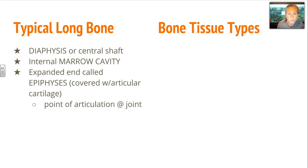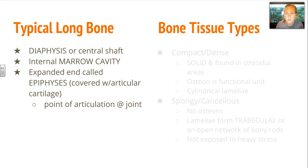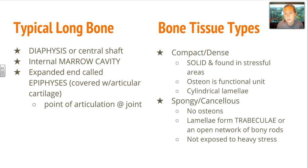Taking a closer look at a typical long bone, you have the diaphysis, or the central shaft — the middle portion of the bone. Inside, you have your internal marrow cavity. The expanded ends are called epiphyses, and they're covered with articular cartilage, helping with pivoting at the point of articulation at a joint. There are also two types of bone tissue: compact or dense, and spongy and cancellous. Compact and dense is very solid, found in stressful areas. The osteon is the functional unit, made up of cylindrical lamellae.